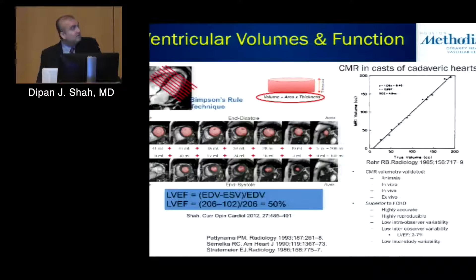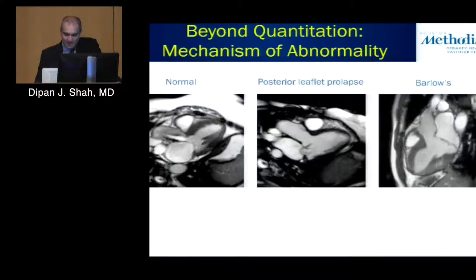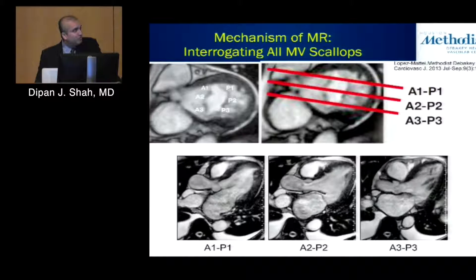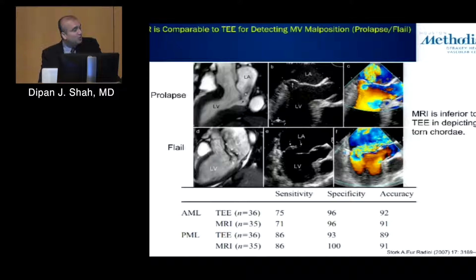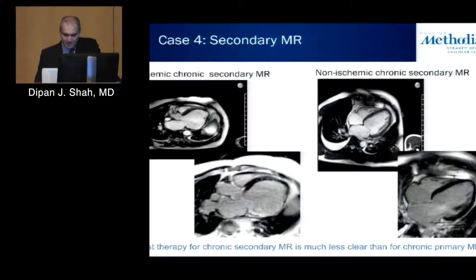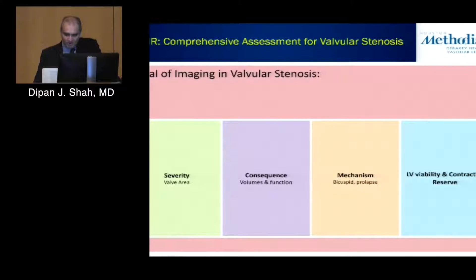CMR can be used to assess the consequences of valvular regurgitation — the size of the left ventricle and left atrium — and also to assess the mechanism of the regurgitation. There is a nice correlation study comparing TEE and MRI for assessing mechanism of mitral regurgitation, where all patients went to surgery and surgical findings were the gold standard. Both TEE and MRI performed reasonably well for assessing regurgitation mechanism. In secondary MR, CMR techniques can also look at viability and scar tissue within the myocardium.